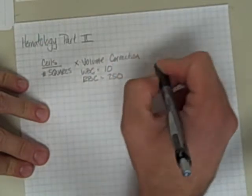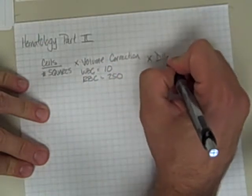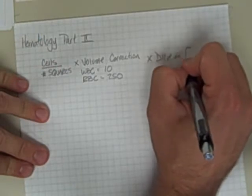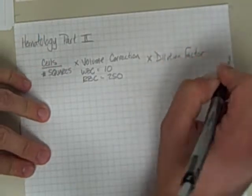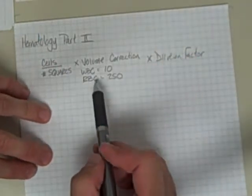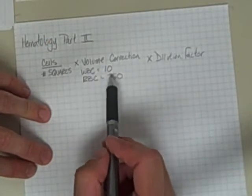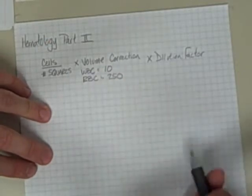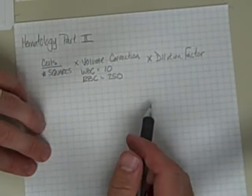And then you multiply that by your dilution factor, and this is going to work every single time. But it requires you to remember these two volume corrections, and sometimes that is not always the first thing on your mind.